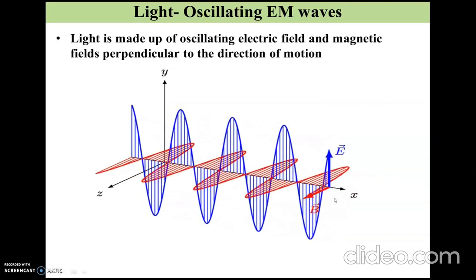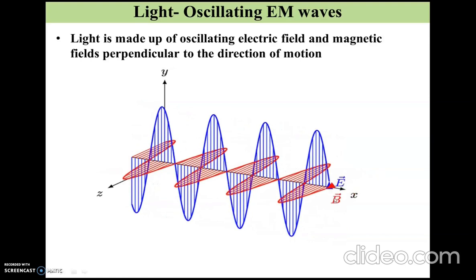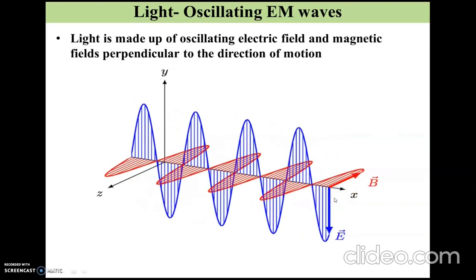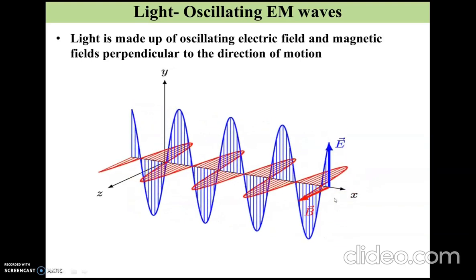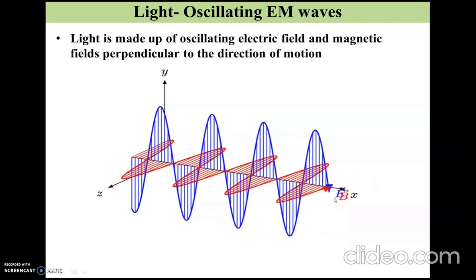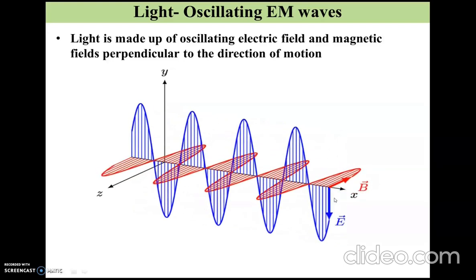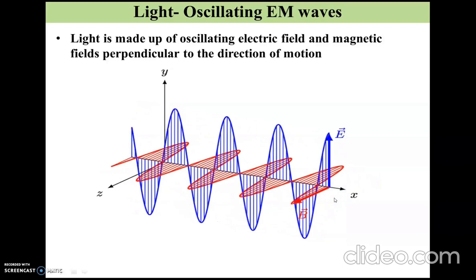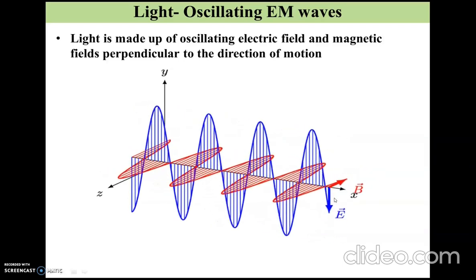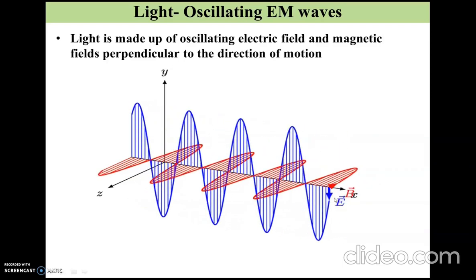Along with the electric field vector, there is a magnetic field component of the light. That's why it is called electromagnetic wave. This B vector is always perpendicular to the electric field vector and to the direction of the propagation of light.